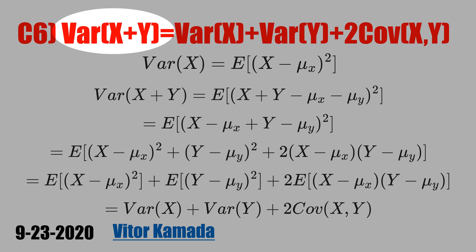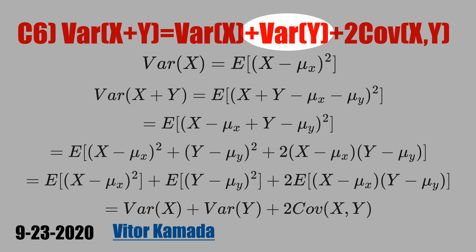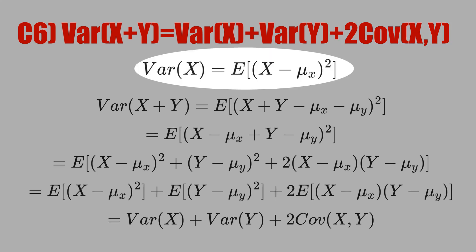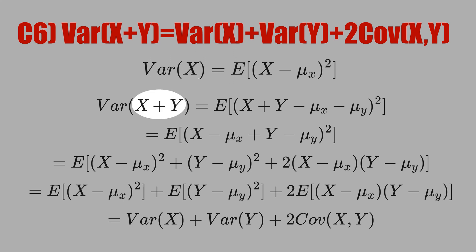In this video, let's show that the variance of X plus Y equals the variance of X plus the variance of Y plus two times the covariance of X and Y. First, let's start with the definition of the variance of X. In place of X, let's plug in X plus Y.